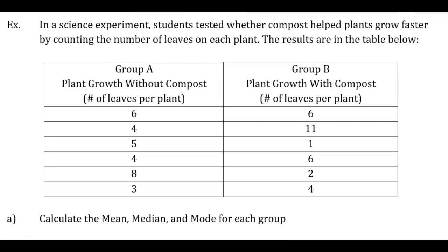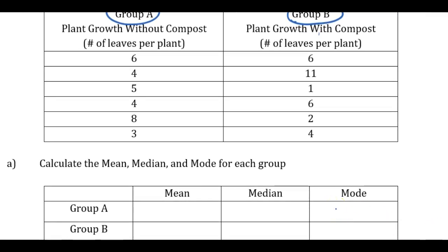So look at another example of that. So in a science experiment, students test whether compost helps plants grow faster by counting a number of leaves on each plant. So the results are shown in the table below. So you have a group of plants. And in each case, you have two test groups, Group A and group B. So for six plants here, you're going to grow them without using any compost. And group B, you're going to feed them using compost. And for each of those six plants, you'll count the number of leaves, just an indication of growth, how well they're doing. So for group A and B, calculate the mean, median, and mode. I'm going to pause it there.